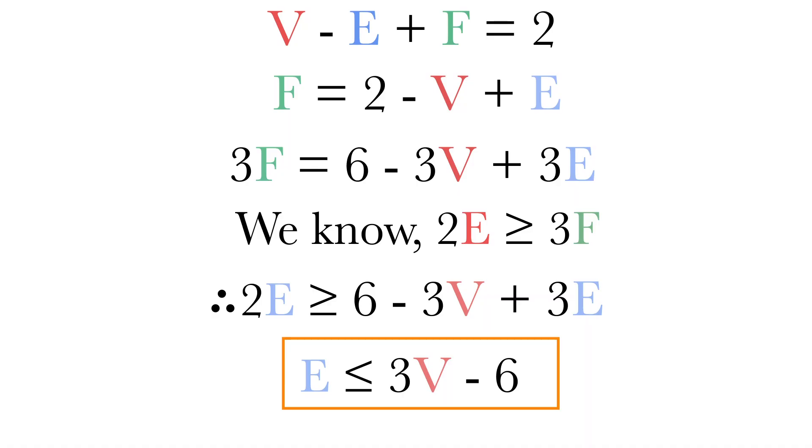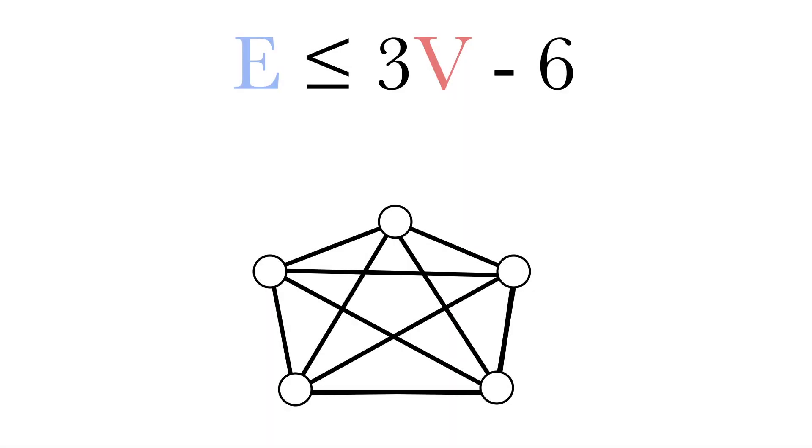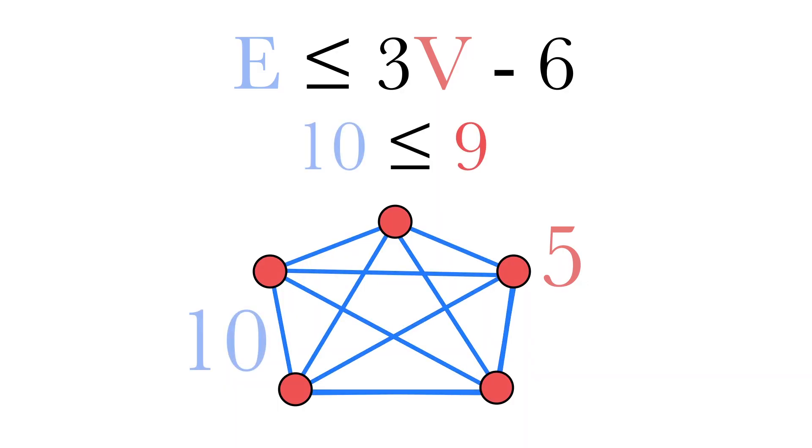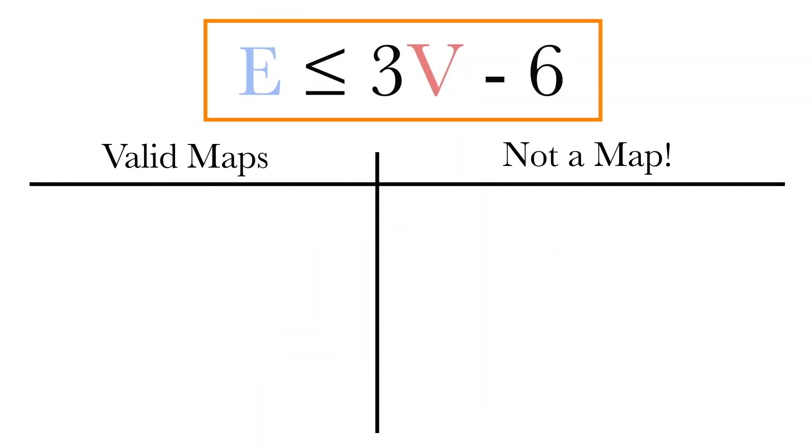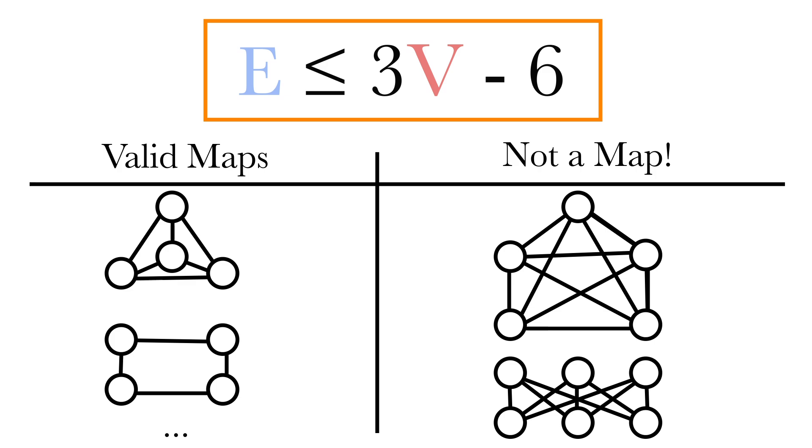This means there are restrictions on the types of graphs we can draw. Take this graph called K5, for example. If we plug in the number of edges and vertices, we get 9 is greater than 10, which is not true. So why is this inequality helpful? Well, it shows us that not every graph you can draw is planar, or you can say, not a valid map.